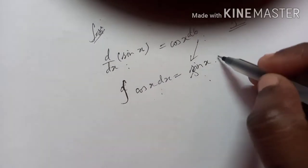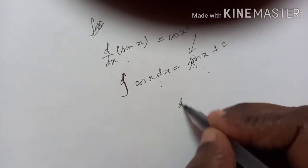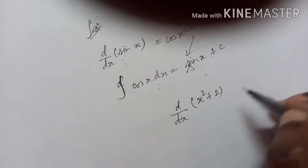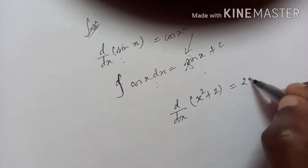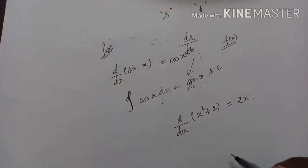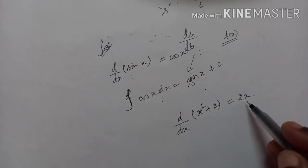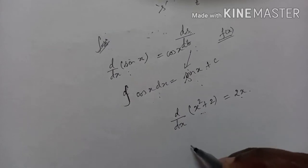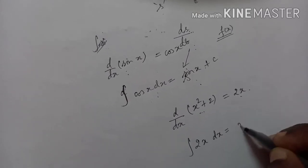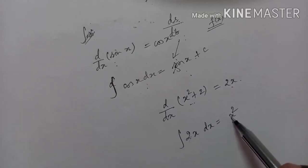Usually we add an integration constant C. The reason is: if you differentiate x squared plus 2, you will get 2x. Since integration is the reverse process of differentiation, when I integrate 2x dx I should get x squared plus 2. Integration of 2x dx gives x squared by 2, and the 2 gets cancelled, so it is simply x squared.